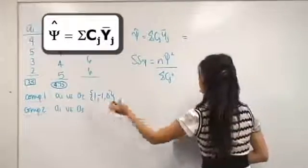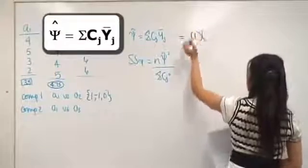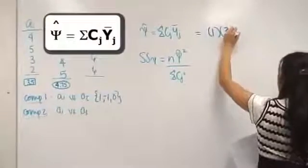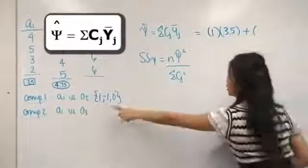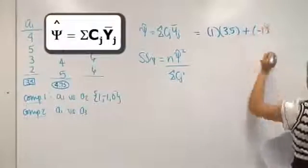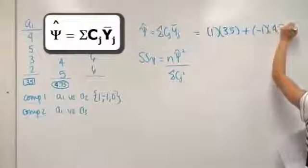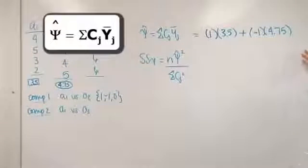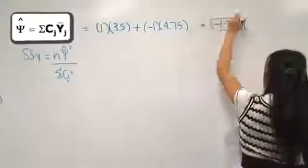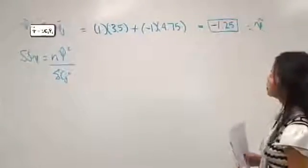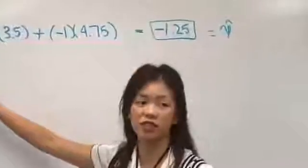My coefficient for A1 is 1, times my mean for group A1, which I calculated to be 3.5. I add that to my coefficient for A2, which is minus 1, times my mean for A2, which is 4.75. I would also add the coefficient for A3, which is 0, so we take that term out. That gives me my psi value.